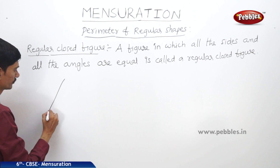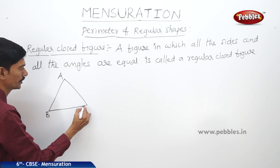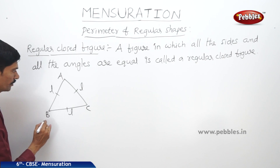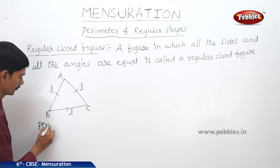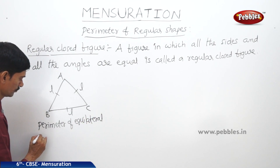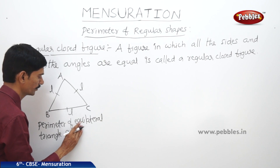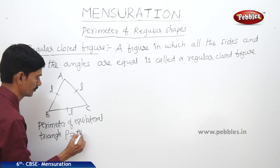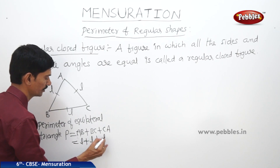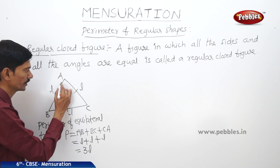If we take an equilateral triangle where the length of each side is L, then the perimeter P = AB + BC + CA = L + L + L = 3L. So the perimeter of an equilateral triangle is 3 times the length of each side.